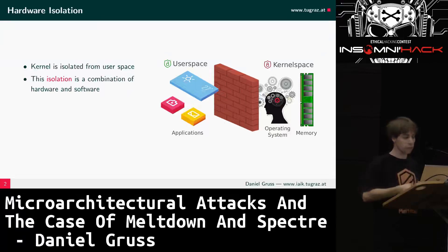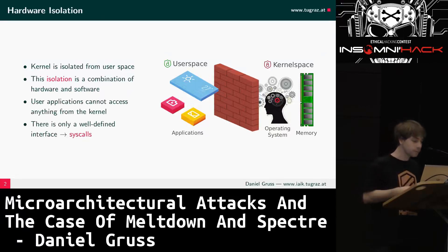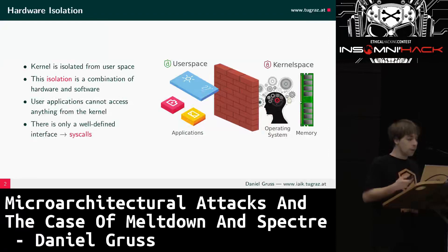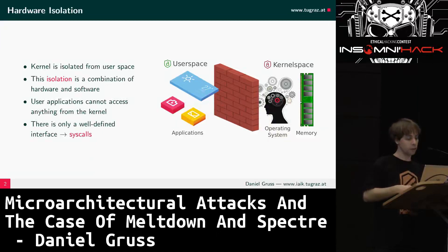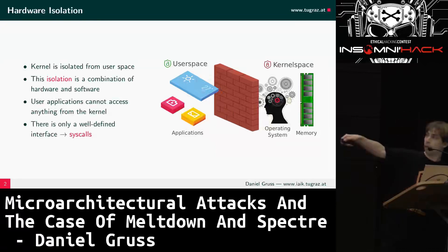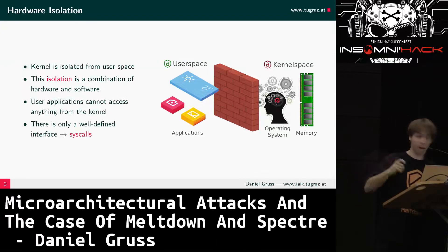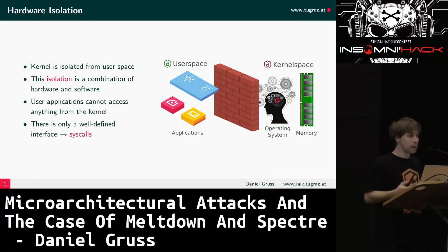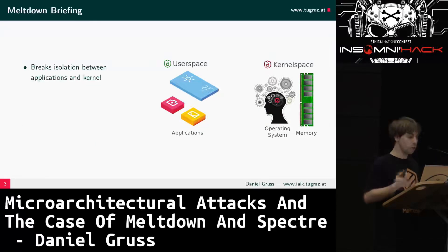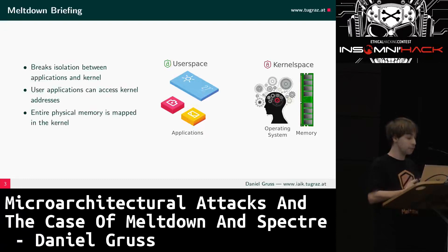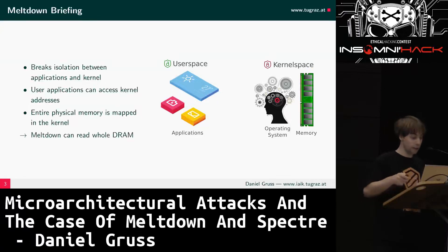There's a huge wall between user space and kernel space. You can't cross this wall except with a syscall, which is a well-defined interface — you can't cross it if the kernel doesn't want you to. User space applications also can't have direct access to each other; my photo app may not have access to my private emails. What Meltdown does is break this wall entirely.